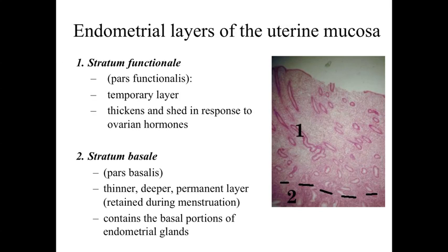Looking at what's going on within the endometrium — which is going through the majority of changes within the uterine cycles, running parallel to the ovarian cycles — we're going to have two layers within the endometrium. We're going to have the stratum functionalis, also described in some books as pars functionalis, which is a temporary layer closest to the space within the uterus. It's the stratum functionalis which is going to thicken and ultimately be shed in response to ovarian hormones. The stratum basale is a thinner, deeper, but permanent layer within the endometrial lining, maintained during menstruation, containing the basal portions of those endometrial glands, and it's these cells that regenerate and form a new stratum functionalis in the next uterine phase.